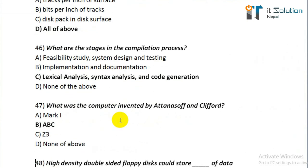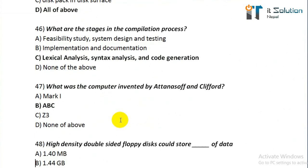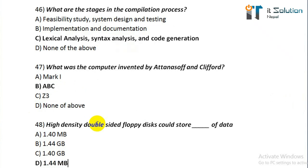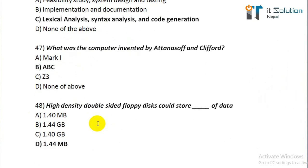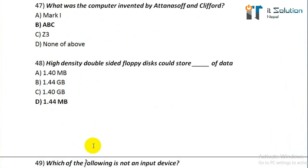Question number forty-seven: what was the computer implemented by Atanasoff and Clifford? Its correct answer is ABC. Question number forty-eight: high-density double-sided floppy disks could hold? Its correct answer is option B, 1.44 MB. Question number forty-nine: which of the following is not an input device? Its correct answer is COM — it stands for Computer Output to Microphone, and the key word to understand is 'output'.